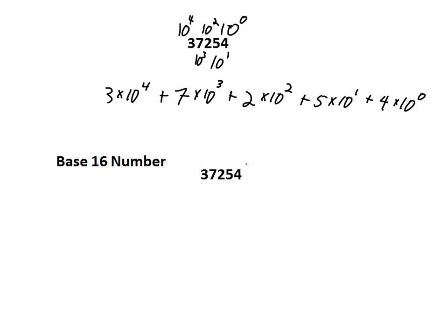I've rewritten the number 37,254, but this time assuming it's a base 16 number. Now instead of place weightings increasing by a factor of 10 each time, the weightings increase by a factor of 16 moving right to left. The first column has a weighting of 16 to the 0, the second 16 to the first, the third 16 squared, the fourth 16 cubed, and the fifth 16 to the fourth. The digit values are all the same, but they're multiplied by different weightings.